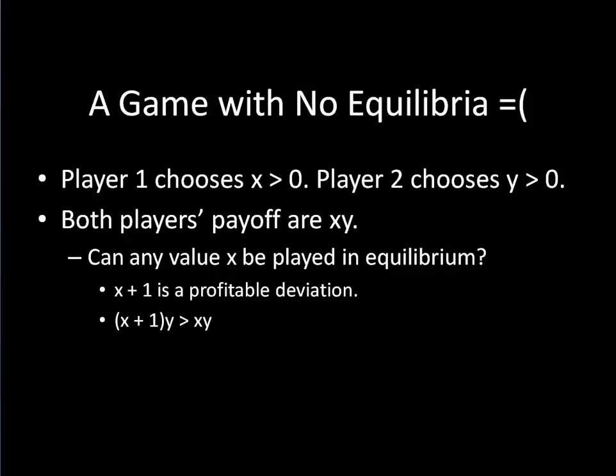So give me any strategy for player one, any value for X that can only be played in equilibrium. If there aren't any profitable deviations of player one can't change the strategy and do better. Well, X plus one is going to do better because X plus one times Y is greater than X times Y. So as a result, player one never has a best response. There are no best responses for player one for any strategy that player two has. And as long as player one doesn't have any best responses, then there can't be any mutual best responses.